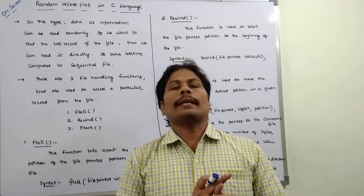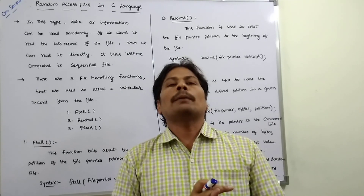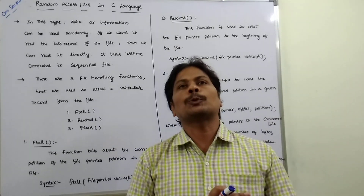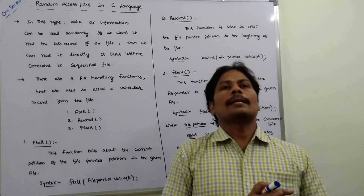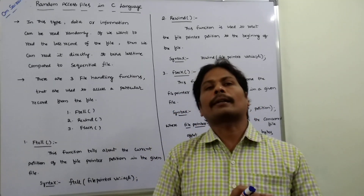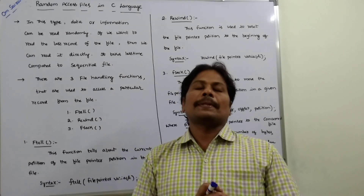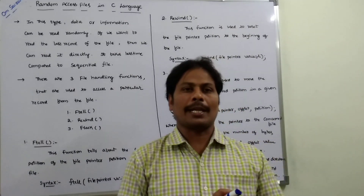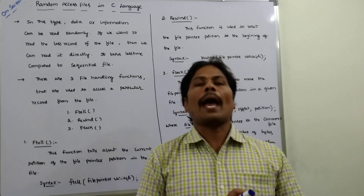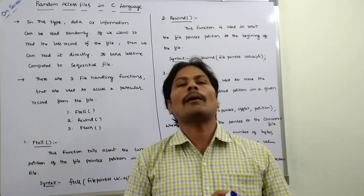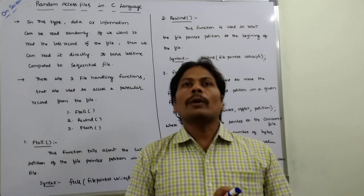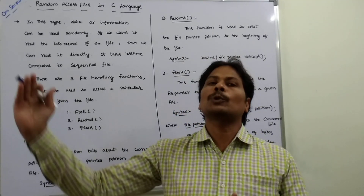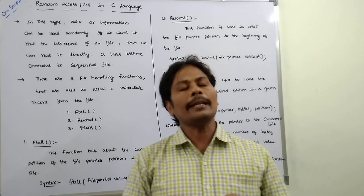Today I am giving a lecture on Random Access Files. Files are classified into two types: first one is sequential files, second one is random access files. In sequential files, data or information is stored sequentially. Suppose we want to access the last record of the file — we start accessing from the first record, second, third, and then go to the last record.